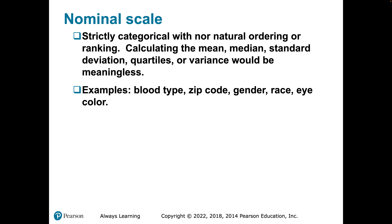On the nominal scale — strictly categorical, no natural ordering — calculating the mean, the median, and the standard deviation would be useless. Examples include blood type, zip code, gender, race, and so on.